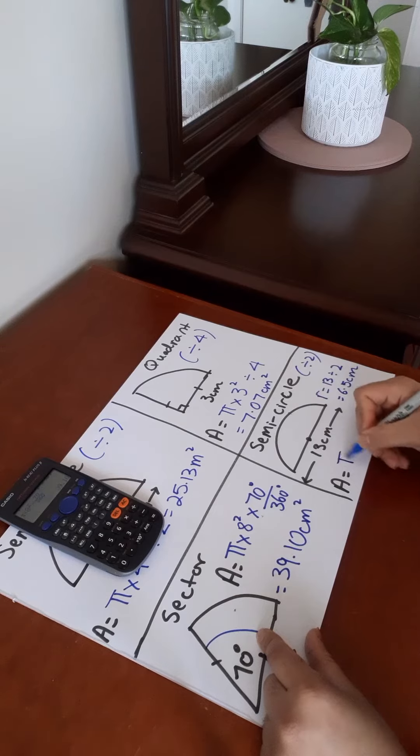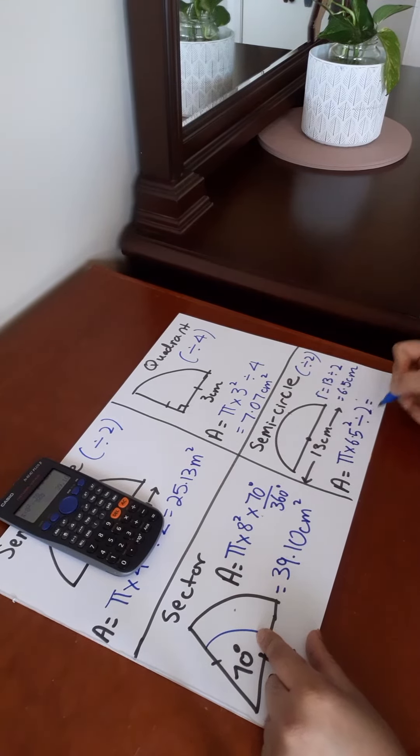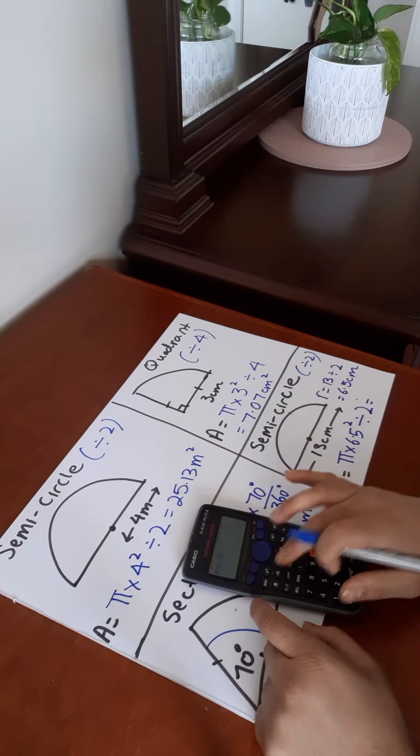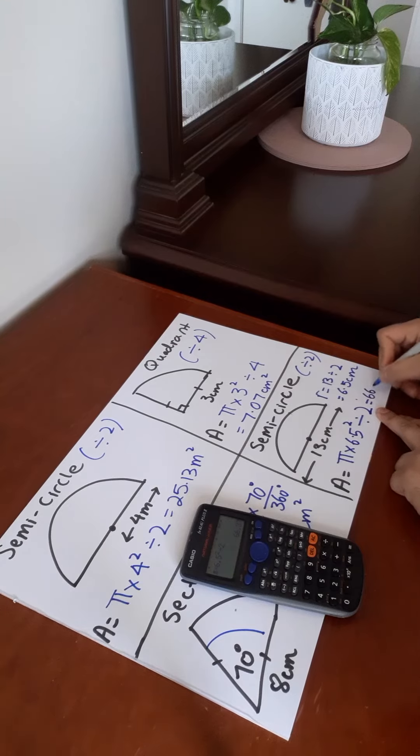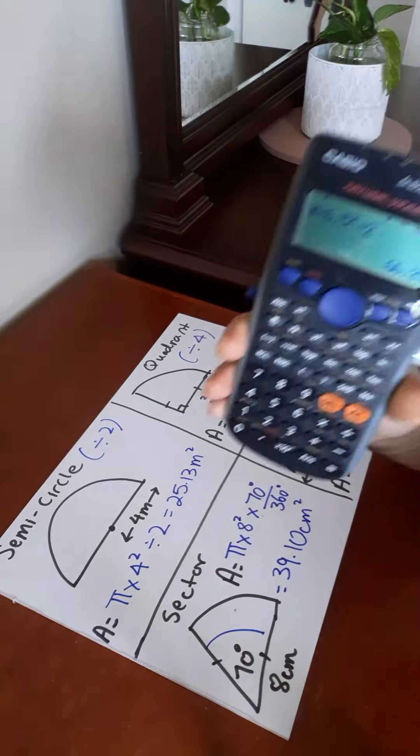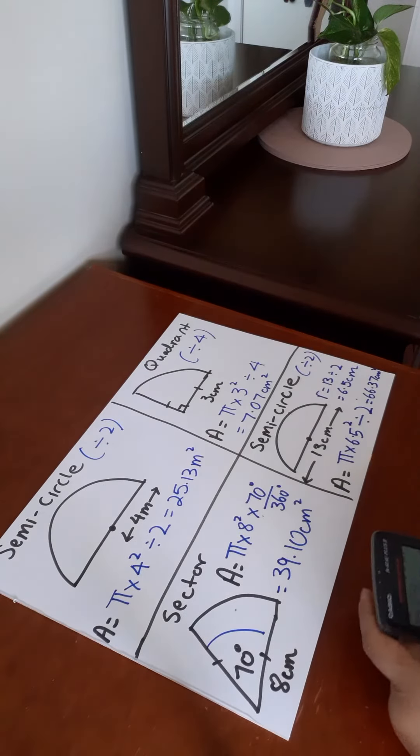Now pi times 6.5 squared divided by 2 because we have half a circle. And pi times 6.5 squared divided by 2, 66.37 centimeters squared. That is the area of a circle with a diameter of 13 centimeters.